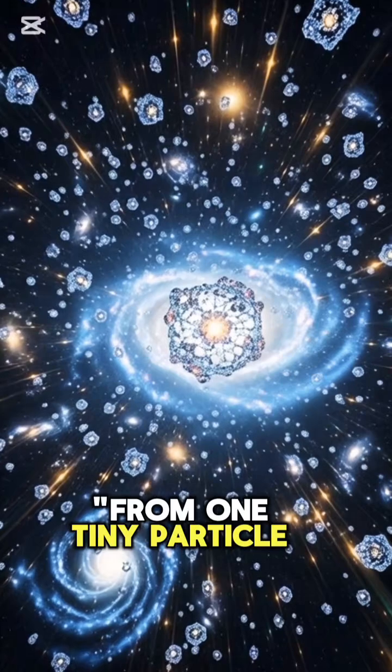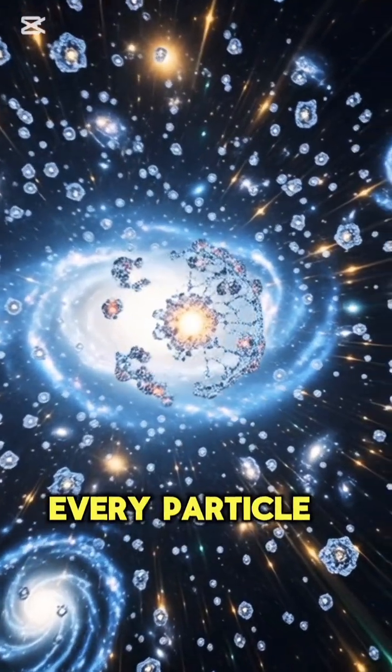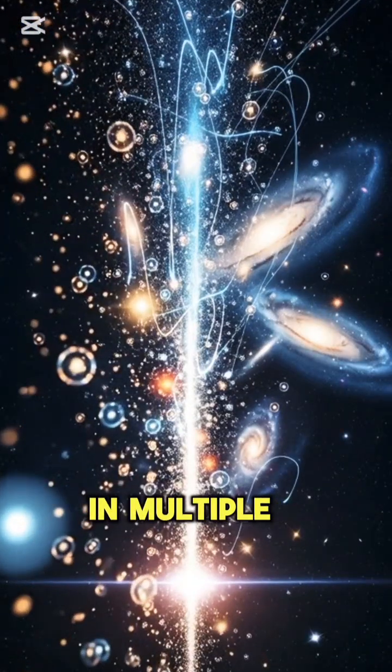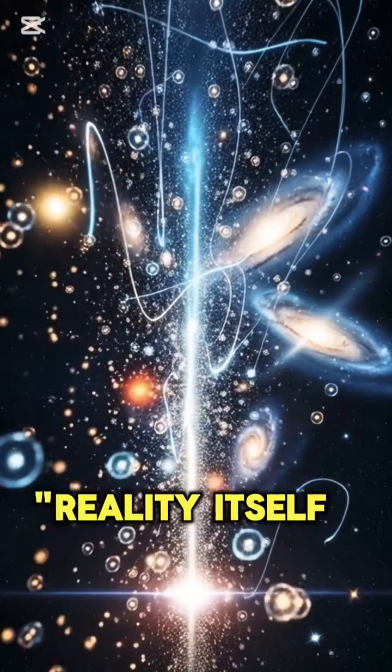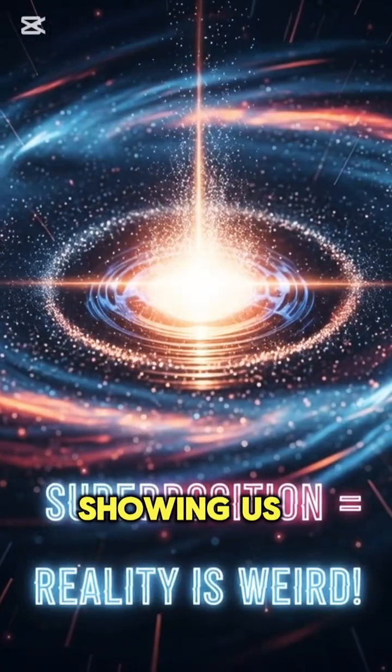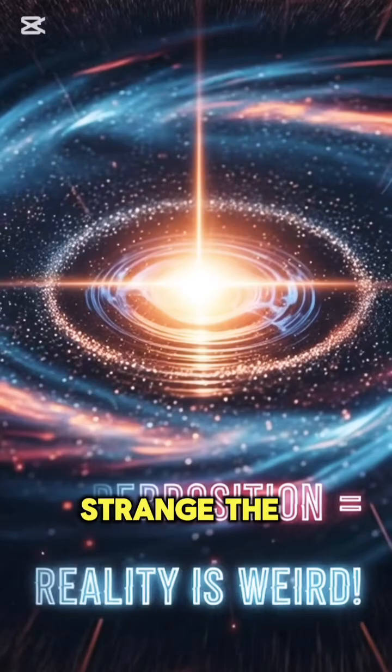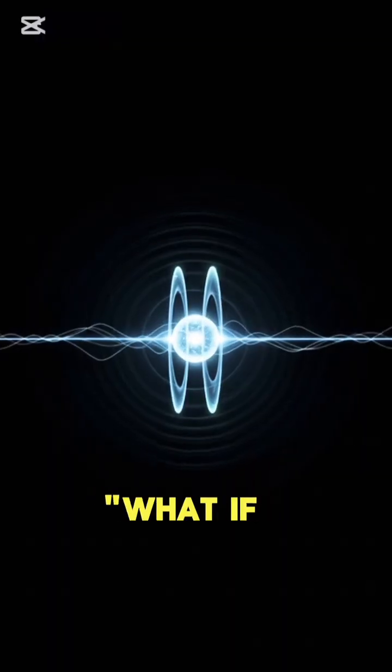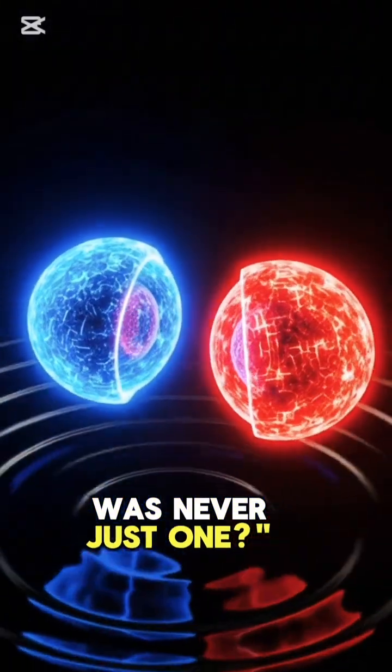From one tiny particle to the vast cosmos, every particle could exist in multiple states at once. Reality itself seems to glitch, showing us just how strange the quantum world really is. What if this particle was never just one?